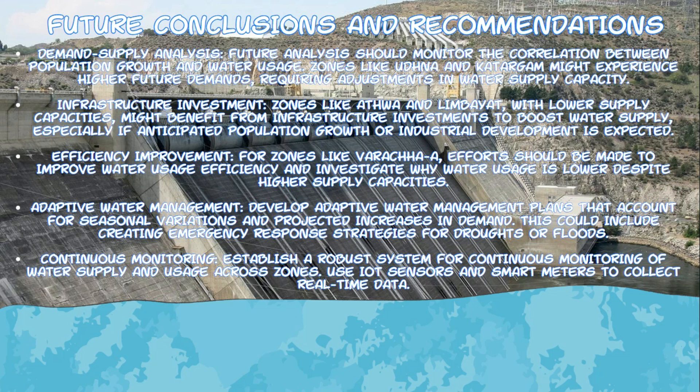Adaptive water management — developing adaptive plans that account for seasonal variations and projected increases in demand — is essential for sustainable water resource management. These plans should include emergency response strategies for droughts, floods, or extreme weather events, as well as flexible water allocation strategies adjusted based on real-time data and predictive analytics. Finally, establishing a robust system for continuous monitoring using IoT sensors and smart meters will provide valuable insights into consumption patterns, enable dynamic adjustments to water distribution, and support timely interventions when abnormalities are detected.